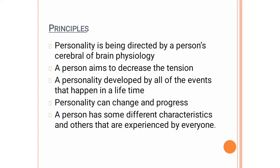Murray explained the following principles: first, personality is directed by a person's cerebral or brain physiology. Second, a person aims to decrease tension. Third, personality is developed by all of the events that happen in a lifetime. Fourth, personality can change and progress. And last, a person has some characteristics unique to them and others that are experienced by everyone.